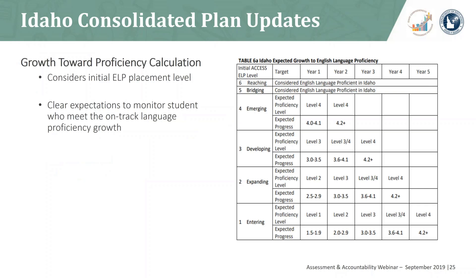Idaho has revised the measure of expected progress of an English learner following the 2020 test administration. The new measure of expected progress considers the student's initial ELP level and sets clear growth expectations based on the six proficiency levels outlined by the WIDA consortium.